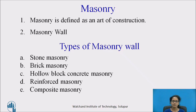There are different types of masonry walls: stone masonry, brick masonry, hollow block concrete masonry, reinforced masonry, and composite masonry. Out of these, we will be studying about stone masonry and brick masonry.